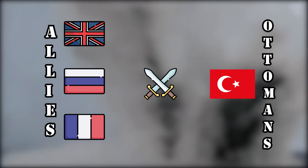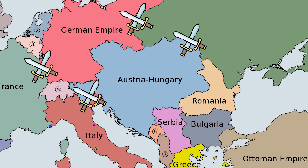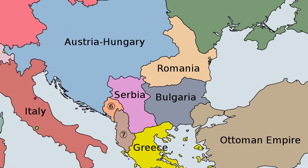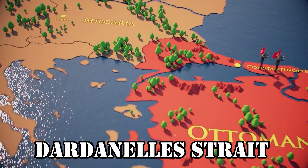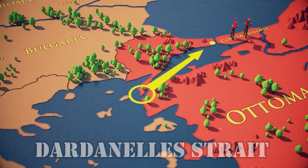The Gallipoli campaign was a military campaign fought between the Allied forces and the Ottoman Empire from April 1915 to January 1916. The campaign was launched with the objective of opening up a new front against the Central Powers and establishing a direct sea route through the Dardanelles Strait to the Russian Empire, which was then an Allied power.